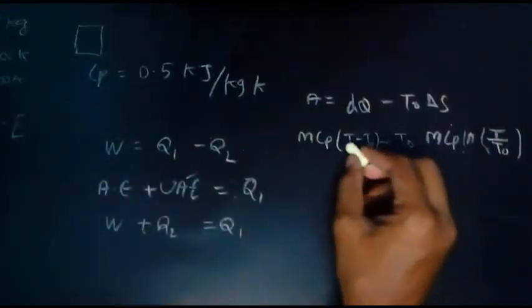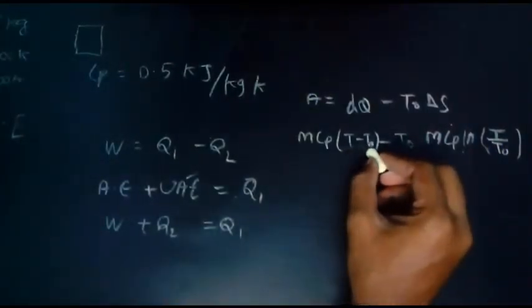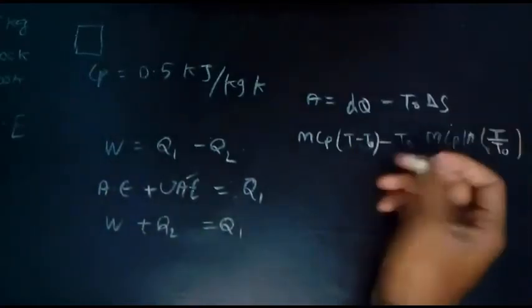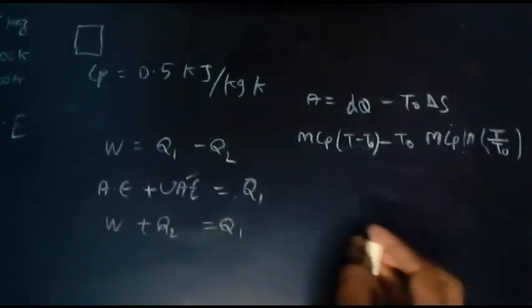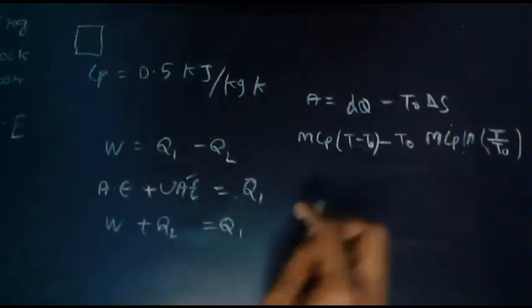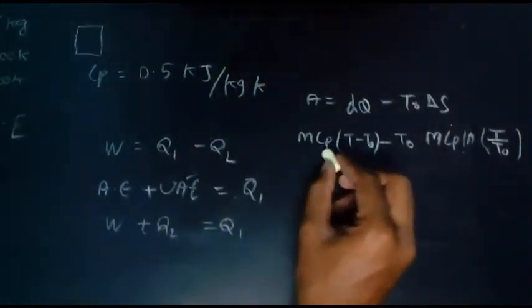Just remember it like this: T minus T naught, inverting it T by T naught. So all these values are given. Mass is given, Cp is given, T is known, T naught is given.